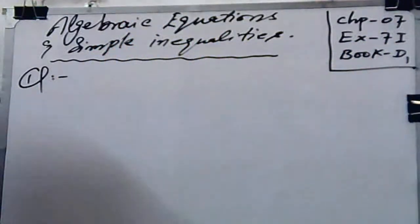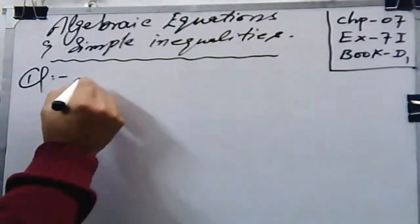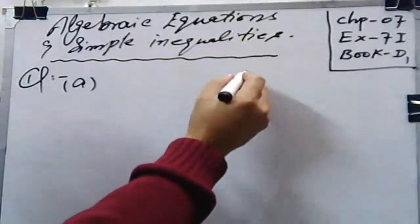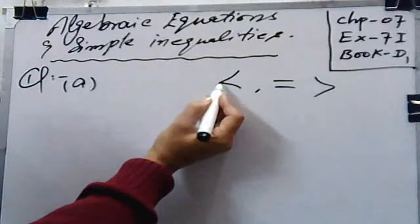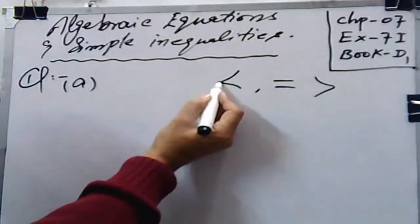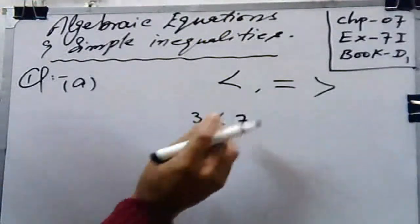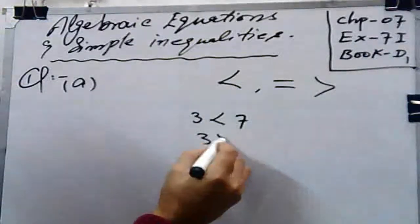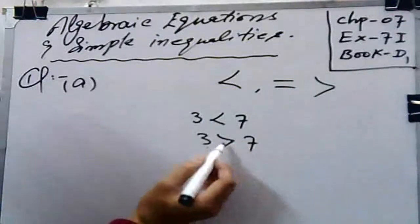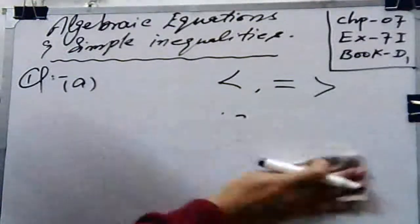Question number one: copy and fill in the blanks with less than, equal to, or greater than, and mark each statement true or false. First, we should be familiar with these signs: the less than sign, the equality sign, and the greater than sign. The arrow tip points to the lesser quantity — for example, three less than seven. If written the other way, it would mean three is greater than seven.